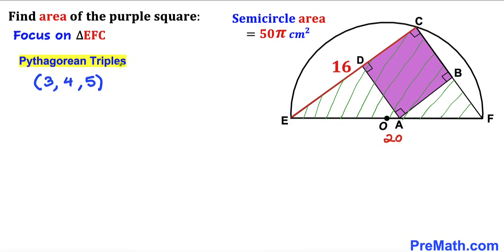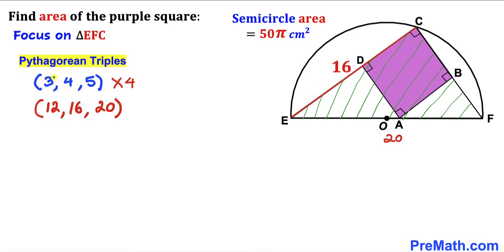In right triangle ECF, the hypotenuse EF is 20 cm and side EC is 16 cm. Recalling Pythagorean triplets: 3-4-5, multiplied by 4 gives 12-16-20. Therefore, the unknown side CF is 12 cm.